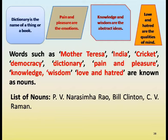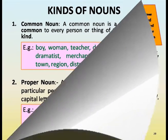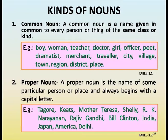List of nouns — P.V. Narsimha Rao, Bill Clinton, C.V. Raman — these are proper nouns. Kinds of nouns: Common noun is a name given in common to every person or thing of the same class or kind. Examples: boy, woman, teacher, doctor, girl, officer, poet, dramatist, merchant, traveler.